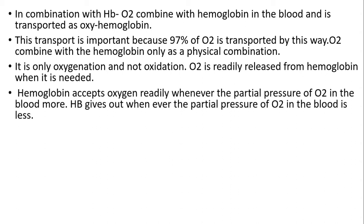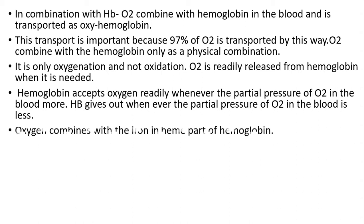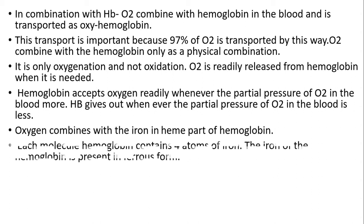Hemoglobin accepts oxygen readily whenever the partial pressure of oxygen in the blood is high. Hemoglobin gives out oxygen whenever the partial pressure of oxygen in the blood is less. Oxygen combines with the iron in the heme part of hemoglobin. Each molecule of hemoglobin contains four atoms of iron.